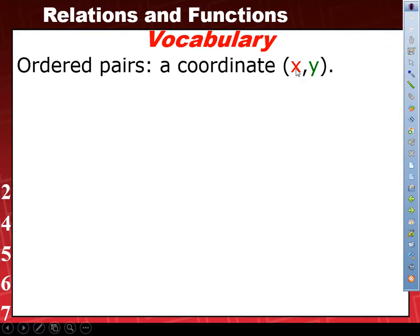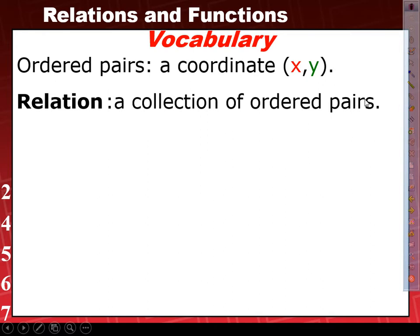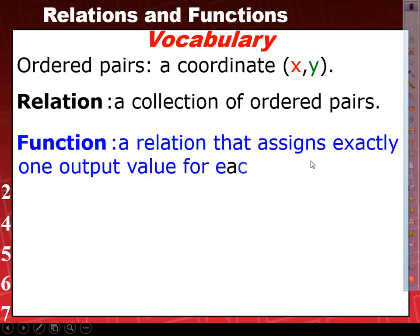Everybody's seen those ordered pairs, right? Now, if I gave you a lot of them, all of those together are called a relation, because a relation is a collection of ordered pairs. Today I'm going to show you a special type of relation that becomes a function. A function is a relation that assigns exactly one output value for each input value.